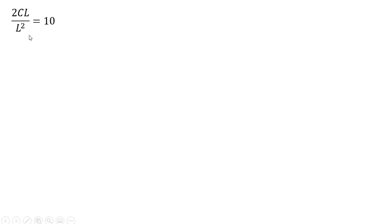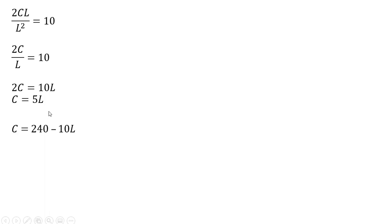Making our substitutions into this formula, plugging in the marginal utility of leisure in the numerator and the marginal utility of consumption in the denominator, and simplifying — the L and L squared terms give us a simplified expression. Solving for C and dividing through by 2, C will equal 5L. Here is our budget constraint, and now we're going to set the two C equations equal to one another.